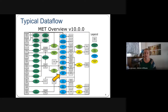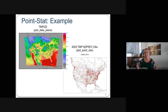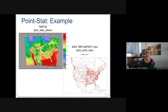Here's a typical data flow. PB2NC, which handles the binary format holding many observation types, writes out the point NetCDF format that PointStat reads. As an example, for temperature at two meters (surface temperature), the field has been plotted using PlotDataPlane, and point observations are shown using the PlotPointObs tool, which we'll run during today's hands-on session.